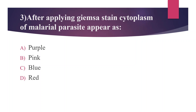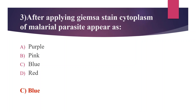Third question: After applying Giemsa stain, the cytoplasm of the malarial parasite appears as — Option A: purple, Option B: pink, Option C: blue, Option D: red. The answer is Option C, blue. Giemsa stain is composed of eosin and methylene blue. Eosin stains the parasite nucleus red, while methylene blue stains the cytoplasm blue. Thick and thin blood films are used here.